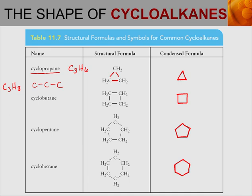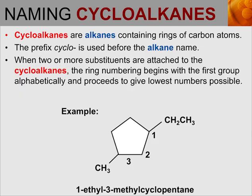The naming here is really easy — we're just adding cyclo in front of each of the alkane names. So cycloalkanes are alkanes containing rings of carbon atoms, and the prefix cyclo is used before the alkane name.